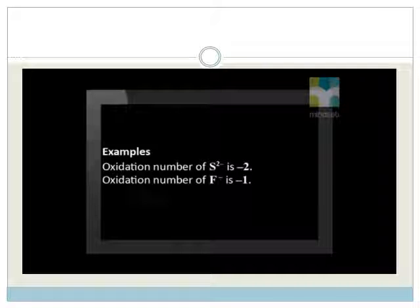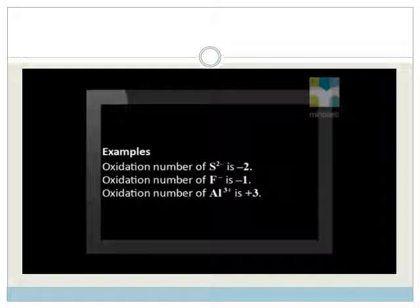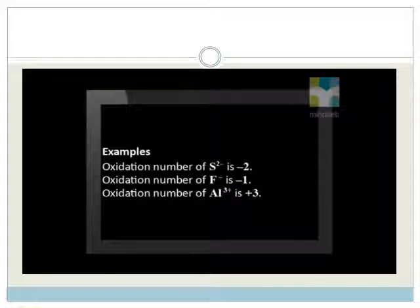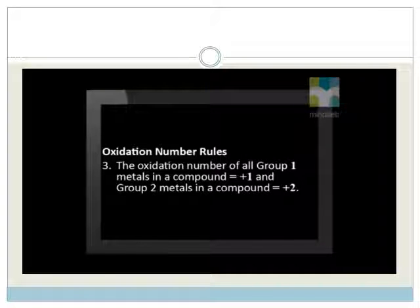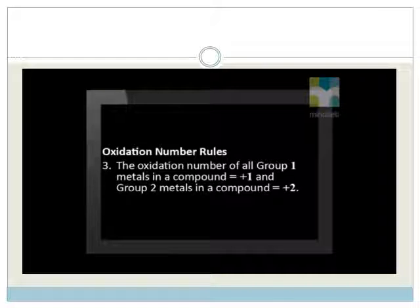Fluorine has an oxidation number of minus 1. Aluminium is in group 3, therefore it loses three electrons to form an ion with an oxidation number of 3 plus. Rule number 3: the oxidation number of all group 1 metals equals plus 1 and group 2 metals equals plus 2 when they are part of a compound.